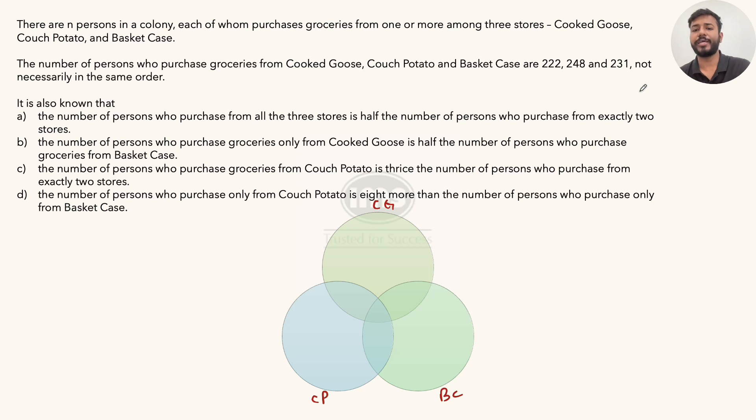Now, the number of persons who purchase groceries from CG, CP and BC are 222, 248 and 231, not necessarily in the same order. This becomes very interesting. The order is not given. CG could be anything right now: 222, 248, 231 and so on for each of the three groceries. So we'll have to figure this out.